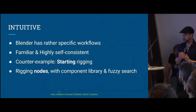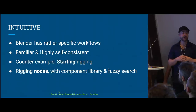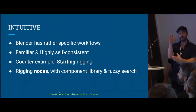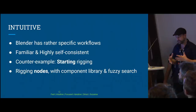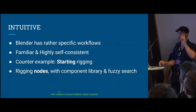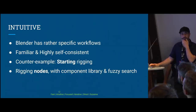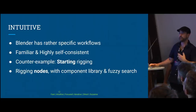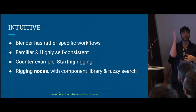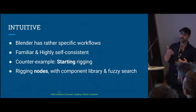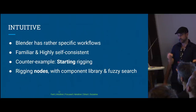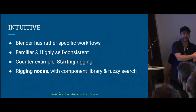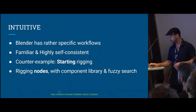A big part of this is rigging nodes with a component library and fuzzy search. Imagine you're rigging a character and you have a great component library of a leg, an arm, a finger, a head — and you just build it out. The idea with fuzzy search is that we all have different languages for rigging. For example, looking at an object: some call it a look-at constraint, others call it an aim constraint. It'd be nice if you could type in your language and Blender understands what you mean.